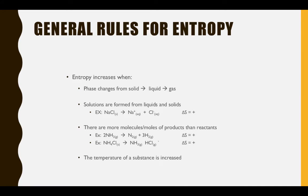When we increase the temperature of a substance, entropy tends to increase, since particles are moving around more and can have more possible arrangements. And finally, when the volume of a gas is increased, there are more places for the particles to be, resulting in more possible ways for them to be arranged.